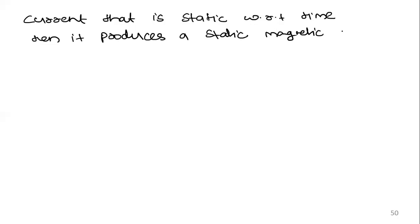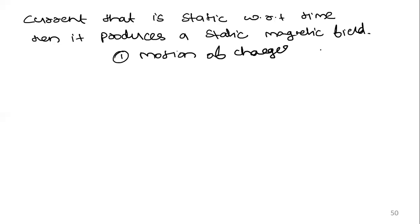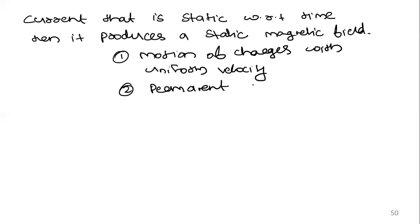The static magnetic field we studied is produced due to steady current — current that is not changing with respect to time. There can be two cases: the motion of charges with uniform velocity, or the use of permanent magnetic dipoles. Both these cases produce an electrostatic or magnetostatic field — that is, it is not time-varying.